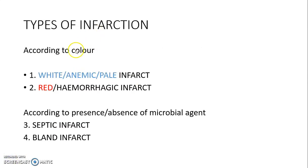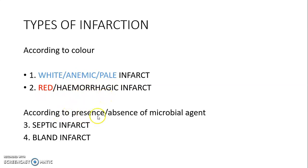Types of infarct: they are classified by color as white infarct (also known as anemic or pale infarct) or red infarct (hemorrhagic infarct). According to the presence or absence of a microbial agent, infarcts are classified as septic infarct or bland infarct.